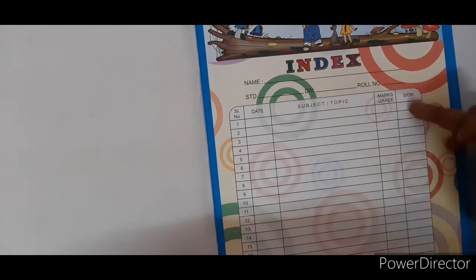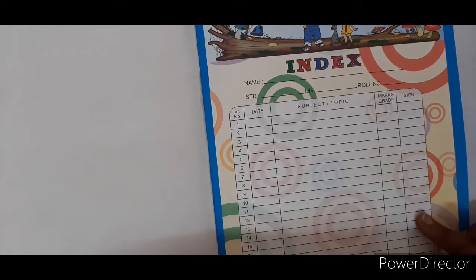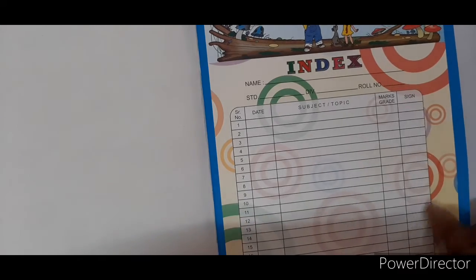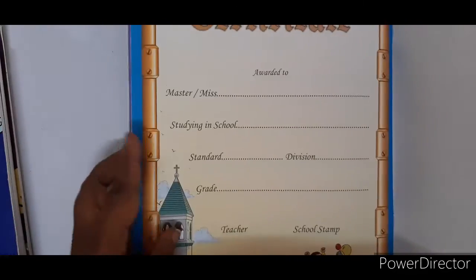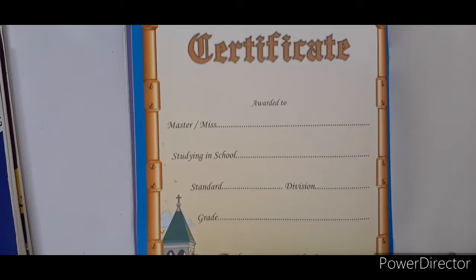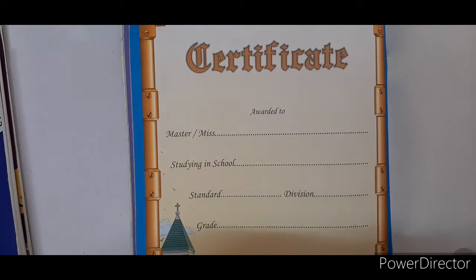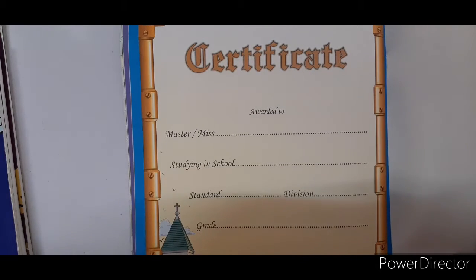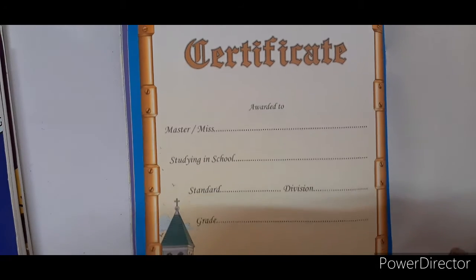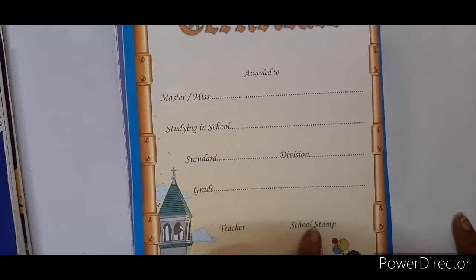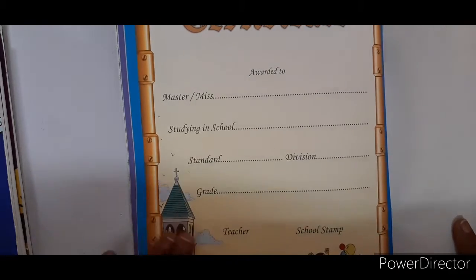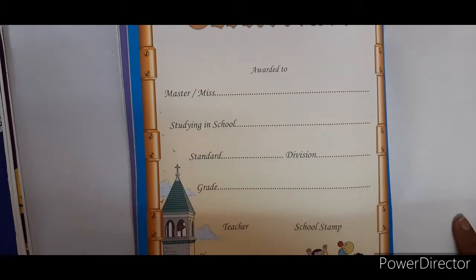You need not write anything in the marks, grade, and signature section. At the end of the scrapbook there is a certificate. Once we go through your projects, we will give your marks, assign you the grades, stamp it, and give it back to you later.